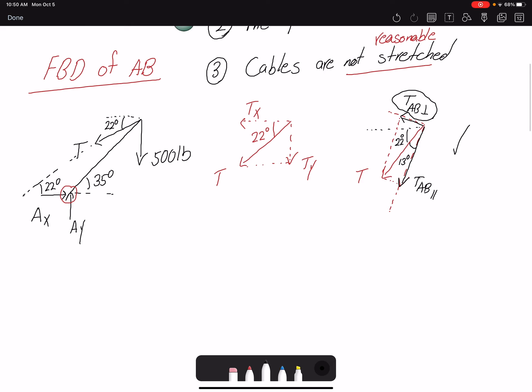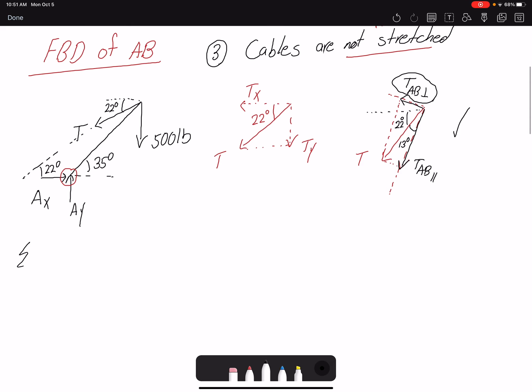So summation of moment about point A equals equilibrium. That means there would be zero, there is no rotation or acceleration. Counterclockwise positive. I have this 500, the moment arm is this distance. What is this sense? The total is 8, so this is 8 cosine 35.